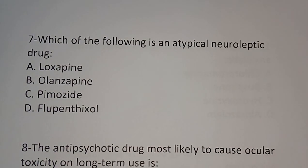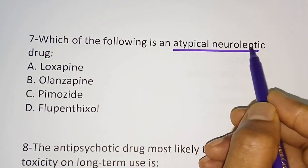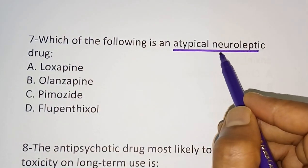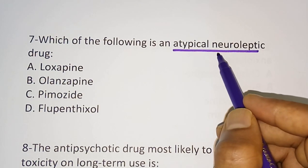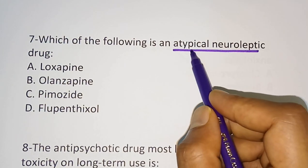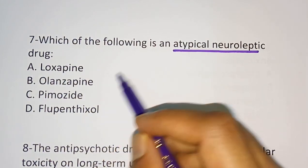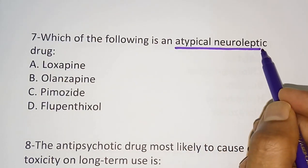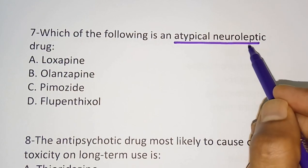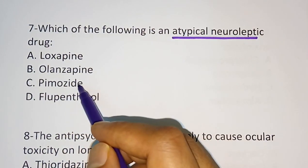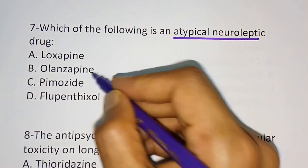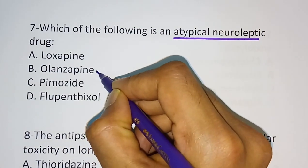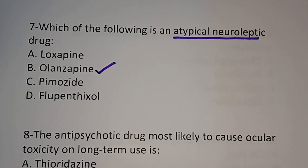Question 7: Which of the following is an atypical neuroleptic drug? This question comes from the classification, which is very important to study. Options are: loxapine, olanzapine, pimozide, flupentixol. The correct answer is option B, olanzapine.